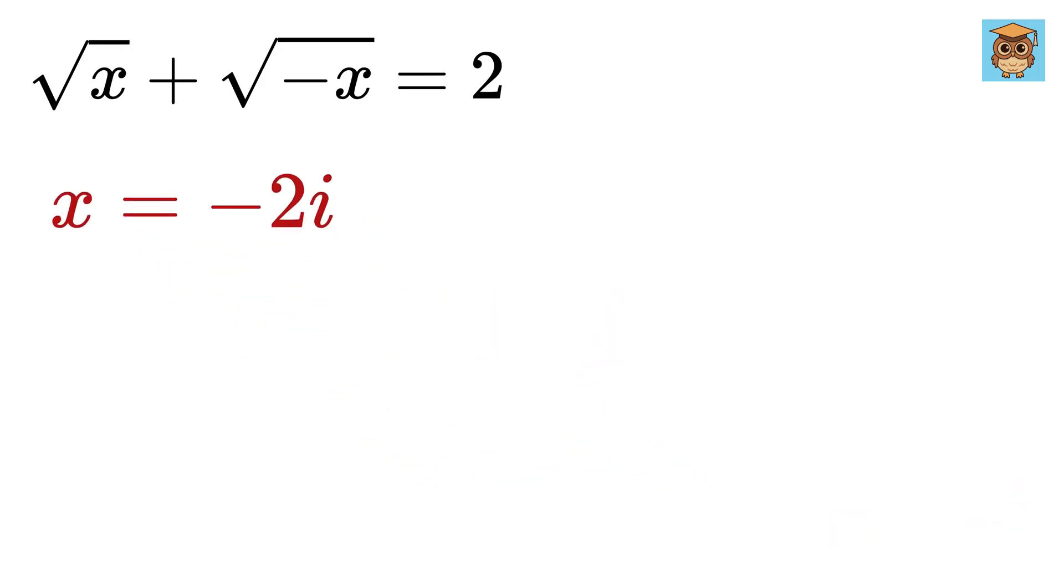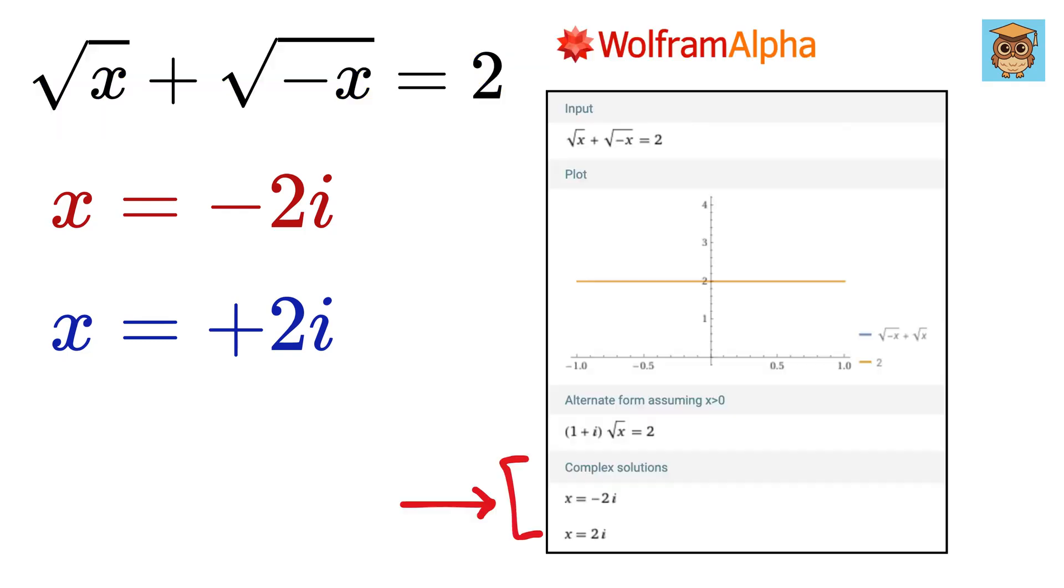Now, if negative 2i is the solution, this means positive 2i can also be a solution, because this thing seems interchangeable. And that's it. Wolfram Alpha also confirms the same.